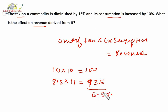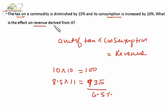It is 6.5 percent. If tax decreases by 15 percent and consumption increases by 10 percent, then the net effect on revenue is a 6.5 percent downfall. So there is a downfall in the revenue. I hope you are getting my point.